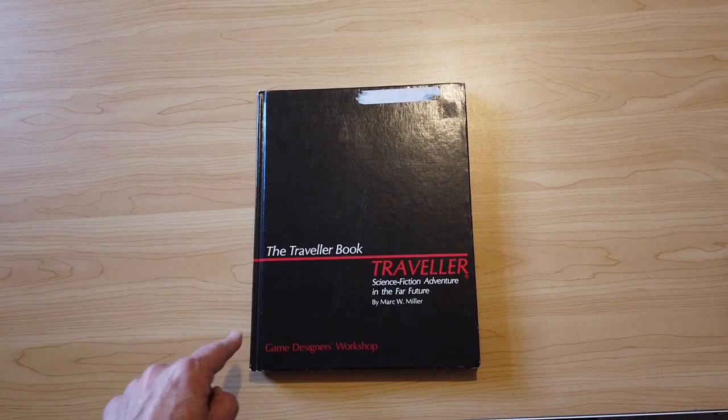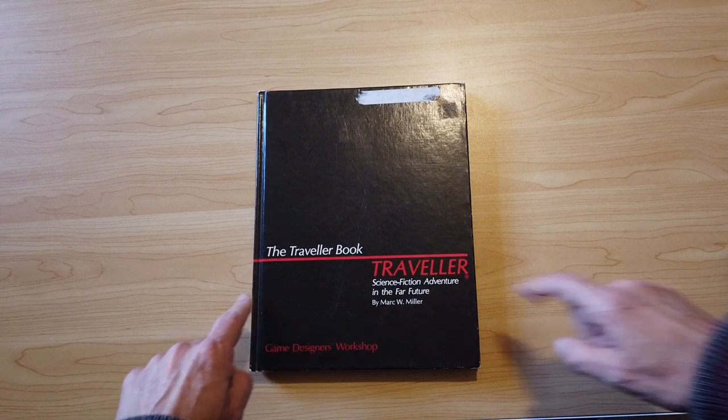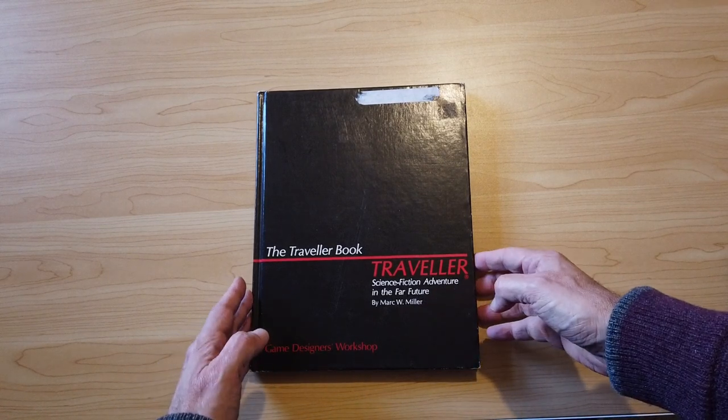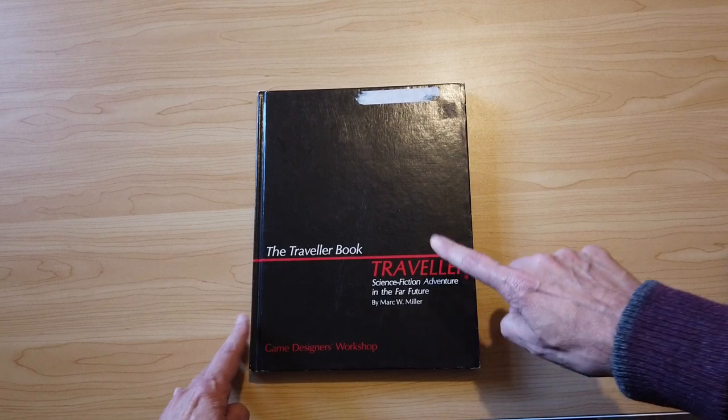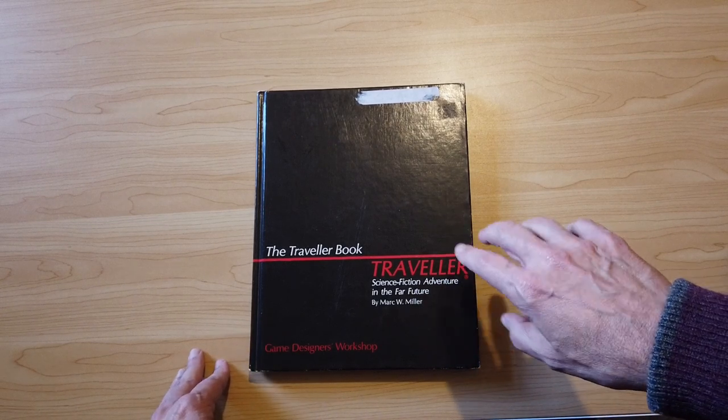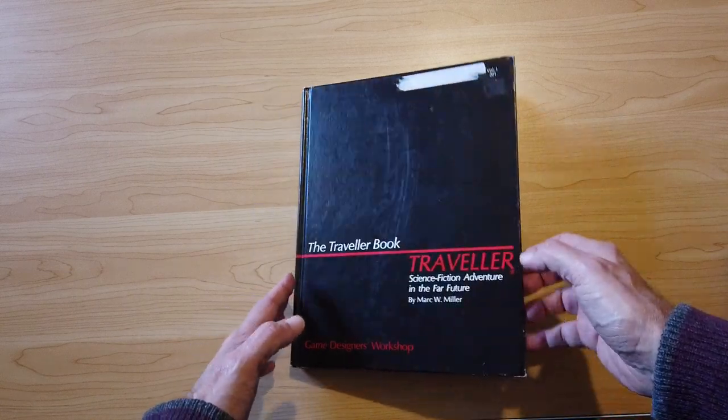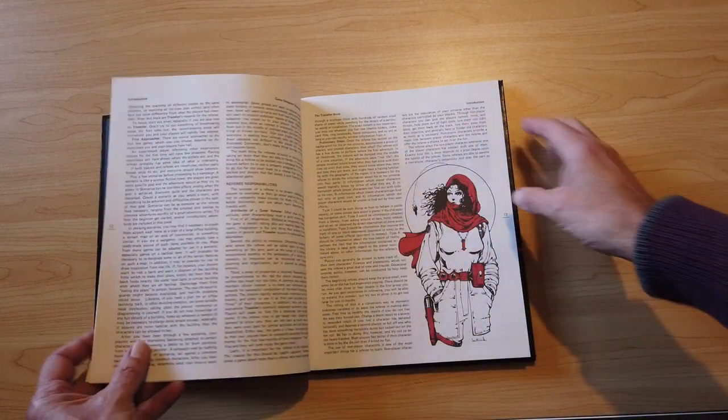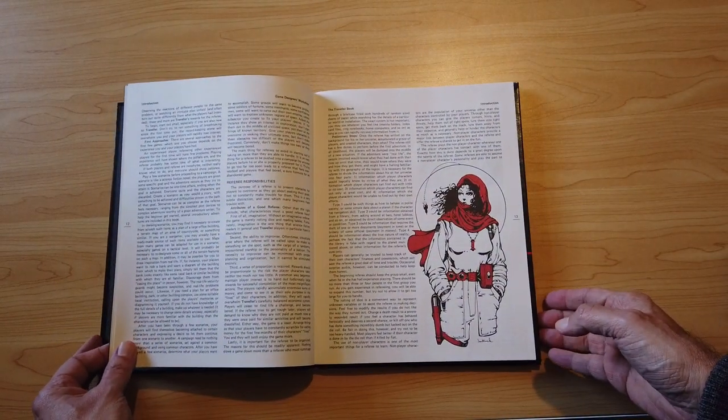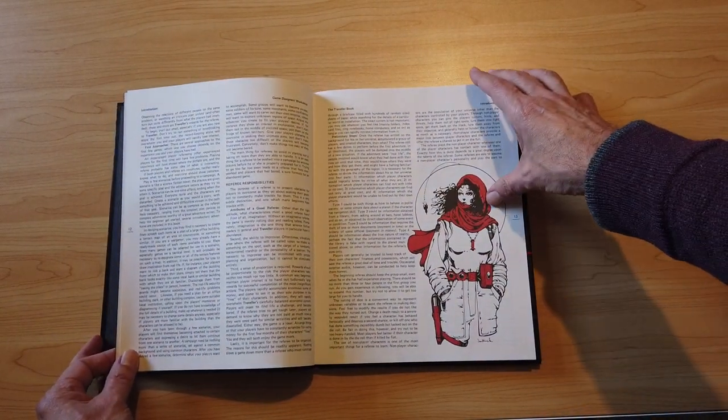So I was thrilled when I had the chance to get this again. So let me show you what's inside of this. So here we have the Traveler book Game Designer's Workshop by Mark W. Miller. And as I say, this is the Traveler book, which was sort of a compilation of the smaller three-book sets you got in the Traveler box set. This added a few things. One of the things that I always liked about Traveler was the artwork. I thought it was really imaginative and evocative.